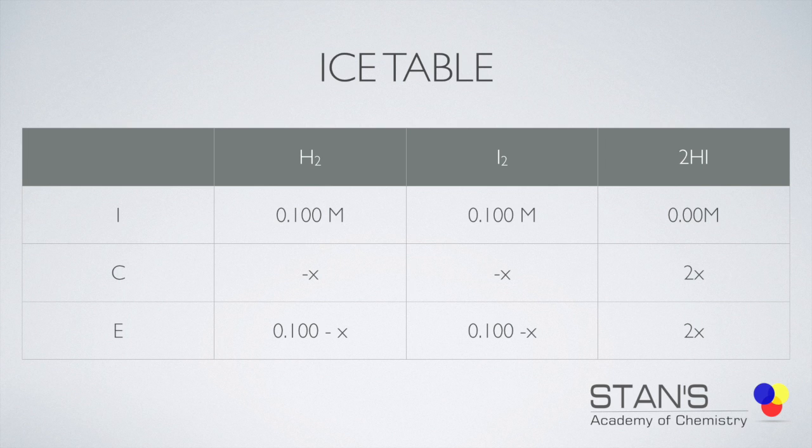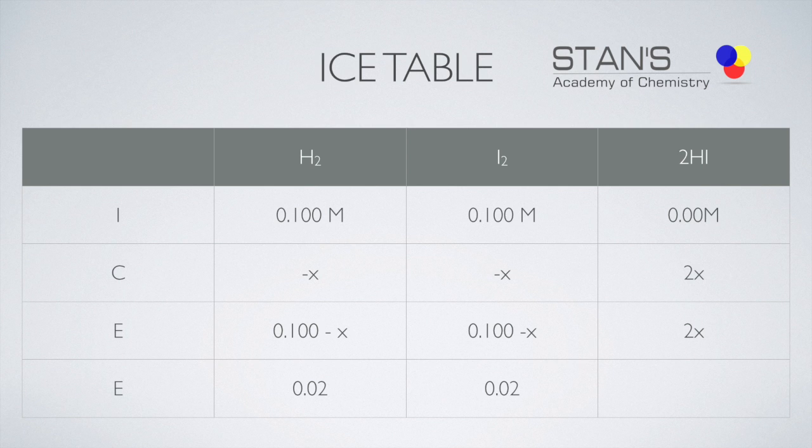That value is 0.02 moles per liter. Using that information, we can determine the value of x. This is how you calculate the value of x: 0.100 minus x equals 0.02 moles of iodine. We are taking iodine as the example since iodine concentration is the one given to us. From that, if you solve for x, the value turns out to be 0.08 M.